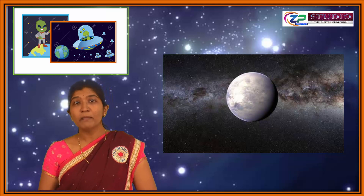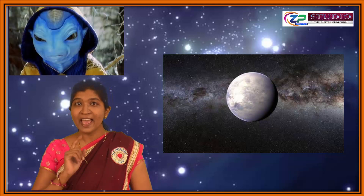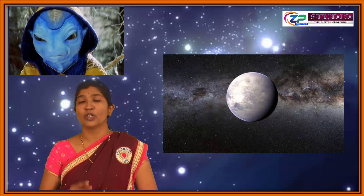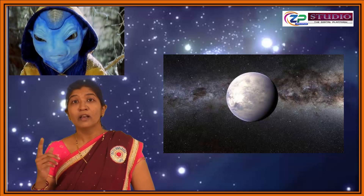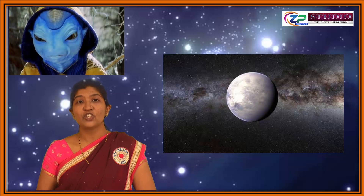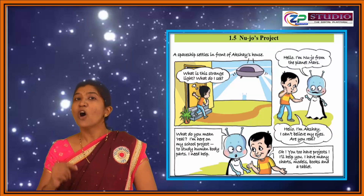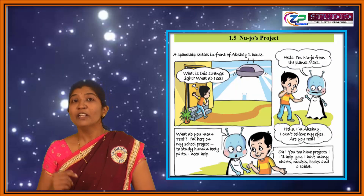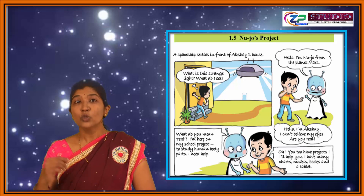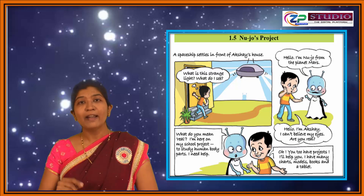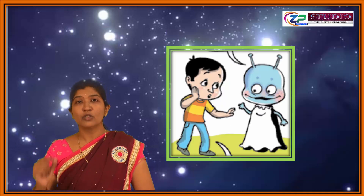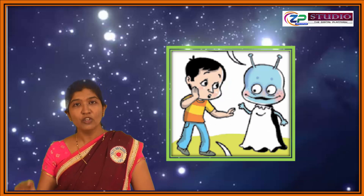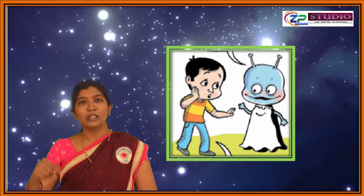Students, we have seen the film Koi Mil Gaya — Jhadu. With Hrithik Roshan we saw one alien whose name was Jhadu. Now in this chapter, we are also going to see one alien who met Akshay for his new project. The name of the alien is New Jho, and we are going to study the story of Akshay and New Jho the alien.